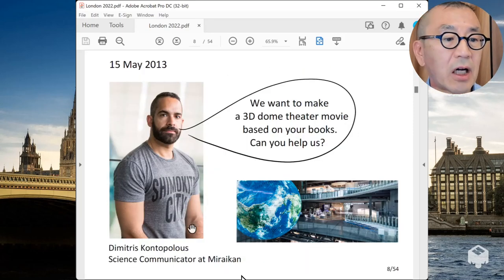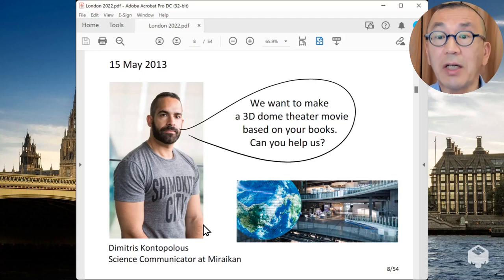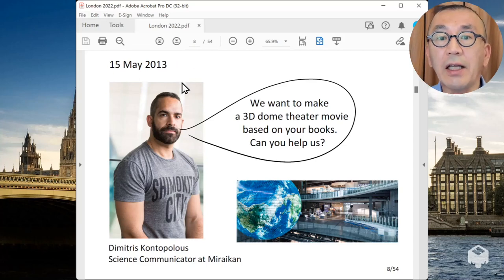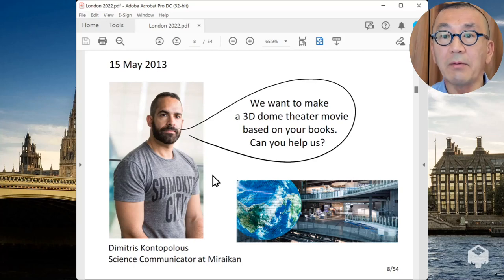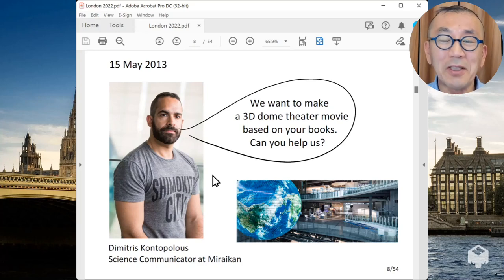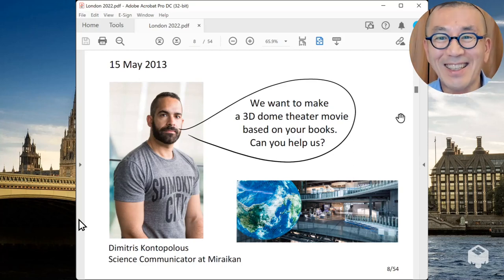This is Dr. Kodopoulos, who was working at that time at the Miraikan, one of the science museums in Tokyo. He approached me nine years ago, and told me that he read one of my books, and he was very excited, and he wanted to make a 3D dome theater movie based on this book, and he asked me whether I can help. I was initially skeptical of whether my book can be made into a 30-minute movie, but I was persuaded by his enthusiasm.